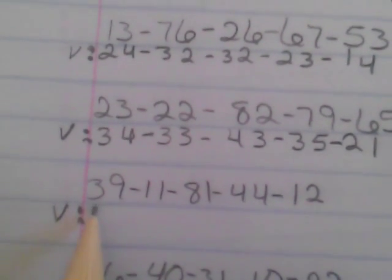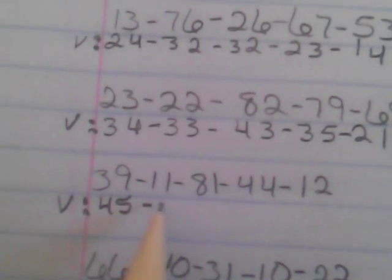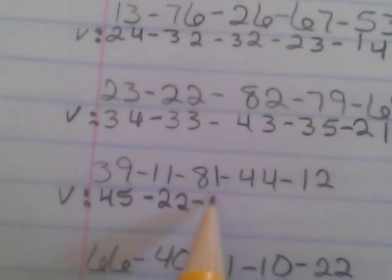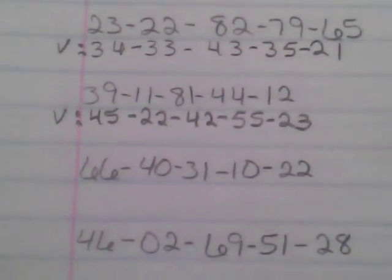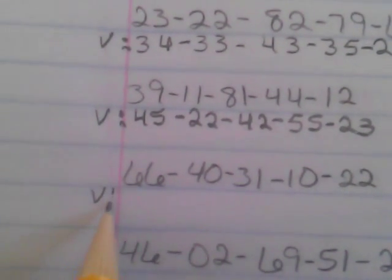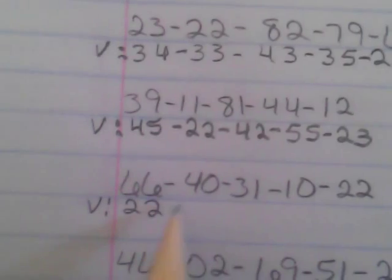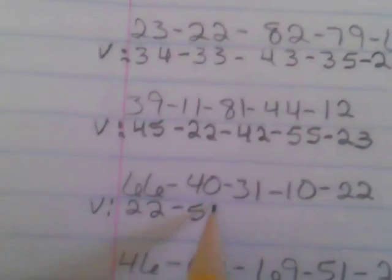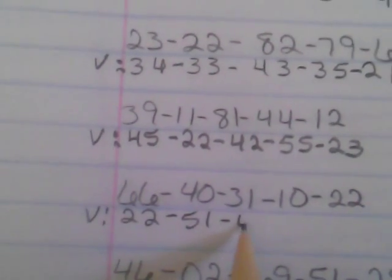Let's V track the next one. 39 is 45, 11 is 22, 81 is 42, 44 is 55, 12 is 23. So there you are: 45, 22, 42, 55, and 23.